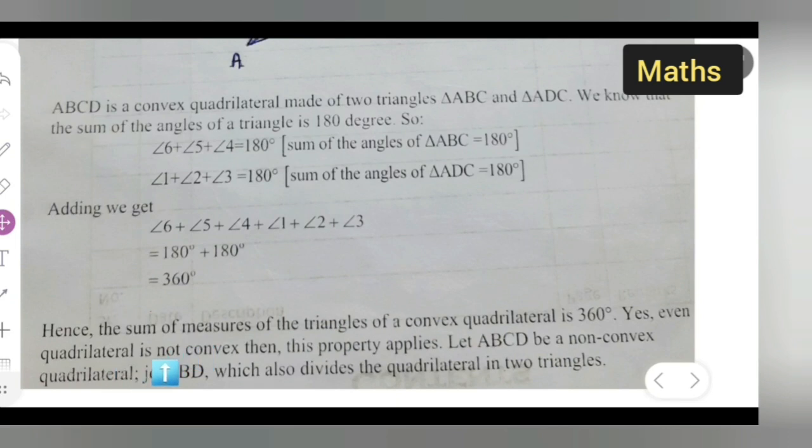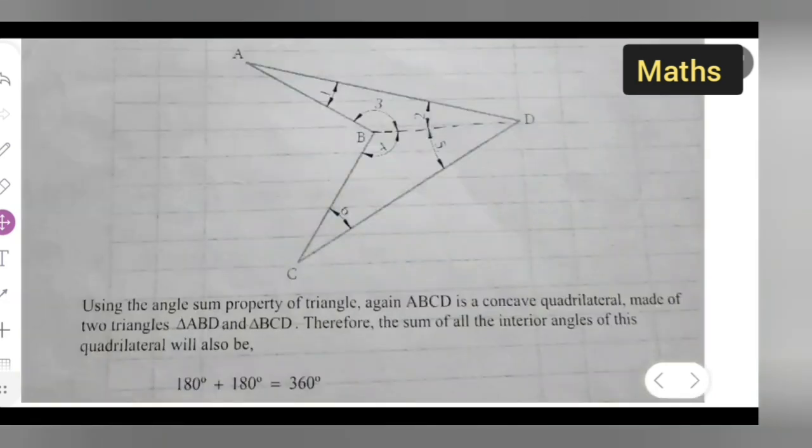Even if the quadrilateral is not convex, this property applies. Let ABCD be a non-convex quadrilateral. Join BD, which also divides the quadrilateral into two triangles. This is another quadrilateral ABCD, and we have joined B and D. Using the angle sum property, triangle ABCD is a concave quadrilateral made up of two triangles ABD and BCD. Therefore, the sum of the interior angles of the quadrilateral will be 180 plus 180, which equals 360.